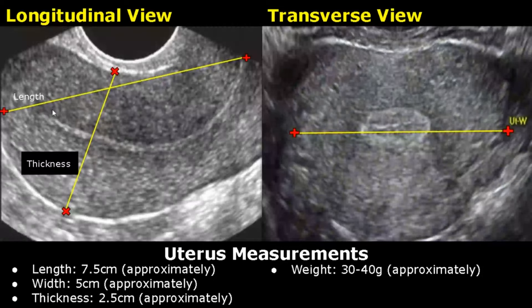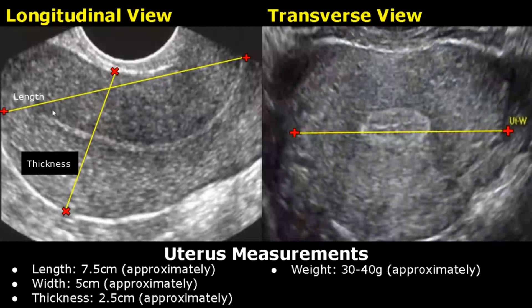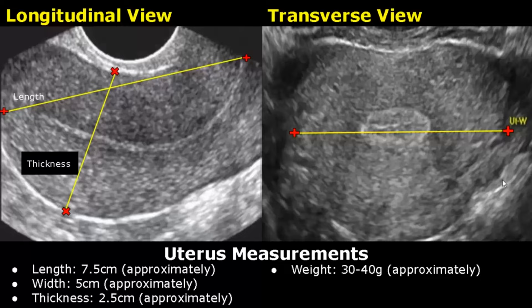These images are taken in transvaginal view. In the longitudinal view, one caliper is placed at the top of the fundus and the other caliper is placed at the end of the cervix. The thickness can be measured by placing the calipers accordingly. In the transverse view taken transvaginally, we can measure the width of the uterus. The uterus weighs around 30 to 40 grams.